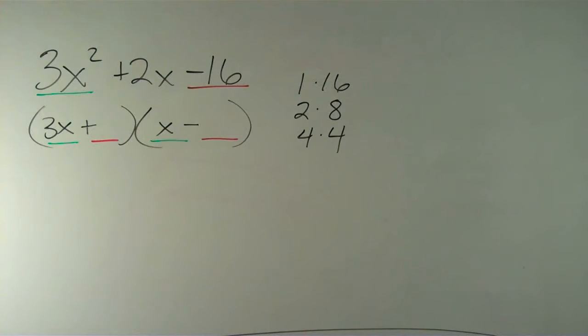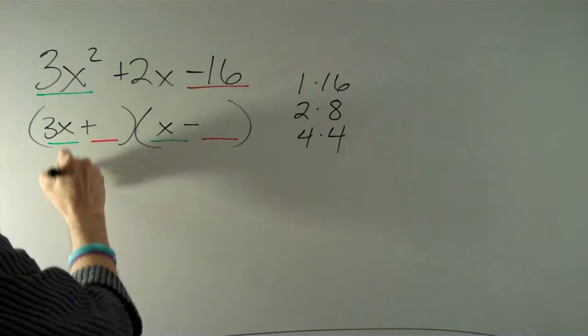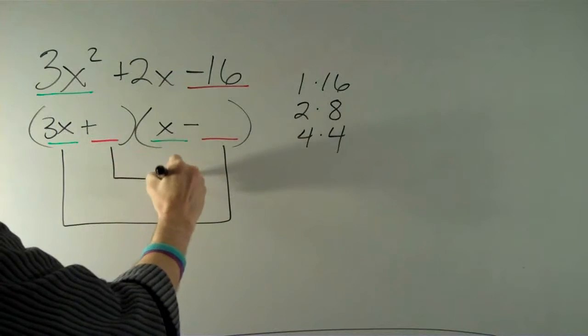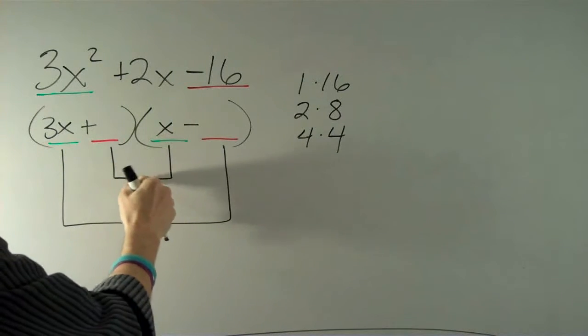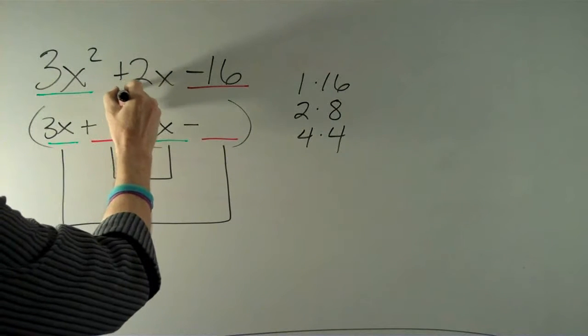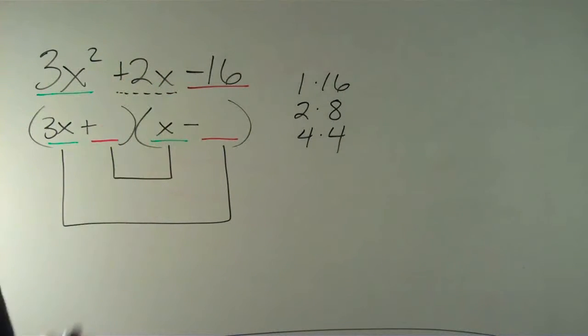What we want to do is take the product of these outside terms and the product of these inside terms, and we're going to add these products. That's what's going to get us our middle term here, positive 2x. So now I think it's time to look at our analysis of odd and even numbers.